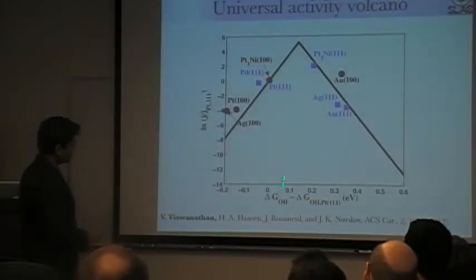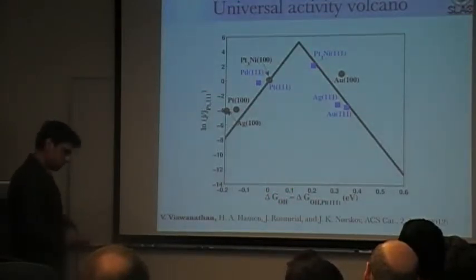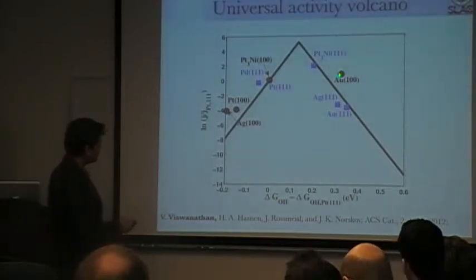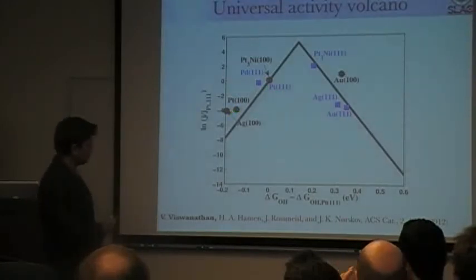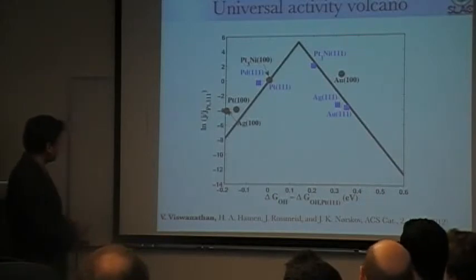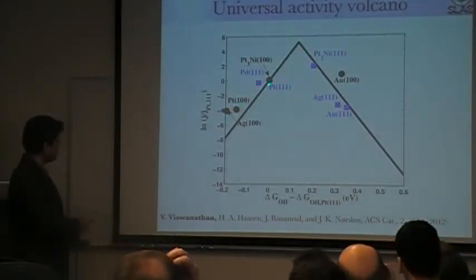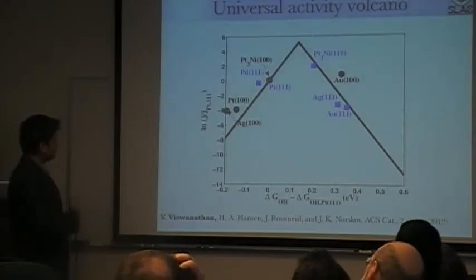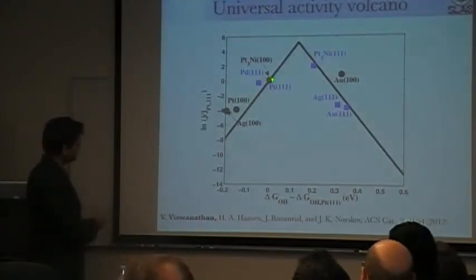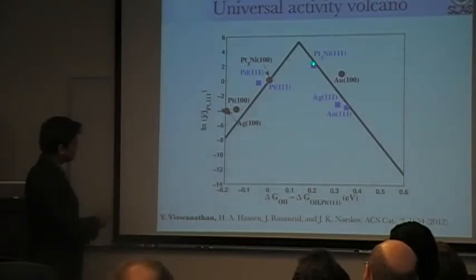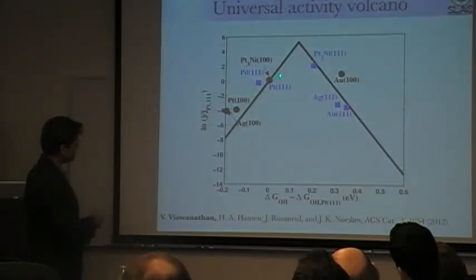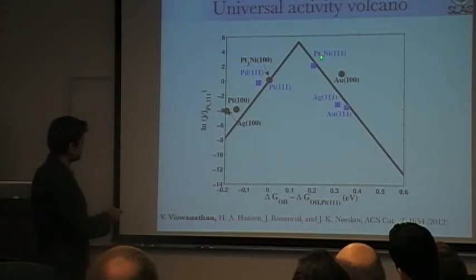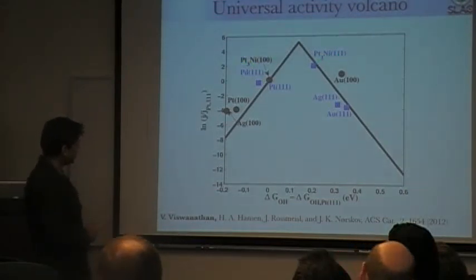And platinum three nickel one-on-one is exactly good for that reason. What you also see, which is very interesting, is all the one-zero-zero facets are to the left of the one-on-one facets. If you take platinum one-on-one, the platinum one-zero-zero is to the left. To the left means it binds stronger. So what this means is the one-zero-zero facets bind stronger. So therefore, in order to design good nanoparticle catalysts, what one should do is be on the right side of the volcano. The reason for this is if you are on the right side of the volcano on the dense facets, then you can use the more undercoordinated facets such as the one-zero-zero, and they are also active. And this is actually the case for platinum three nickel one-on-one and platinum three nickel one-zero-zero.